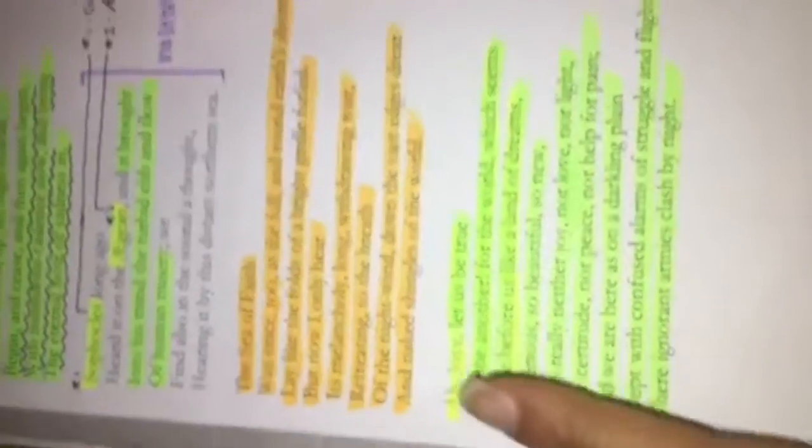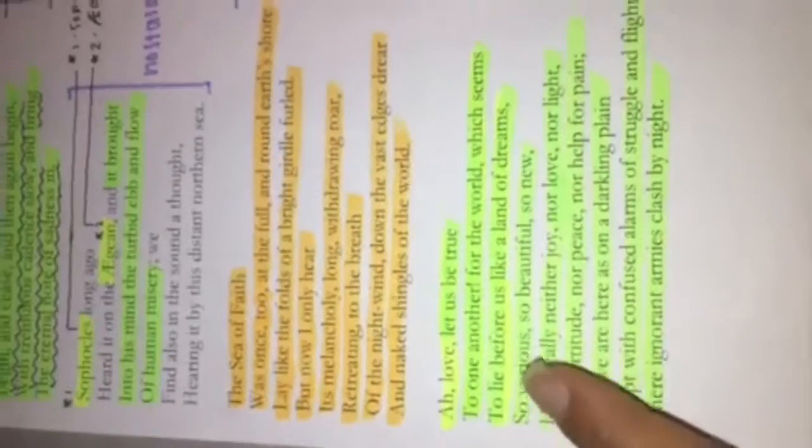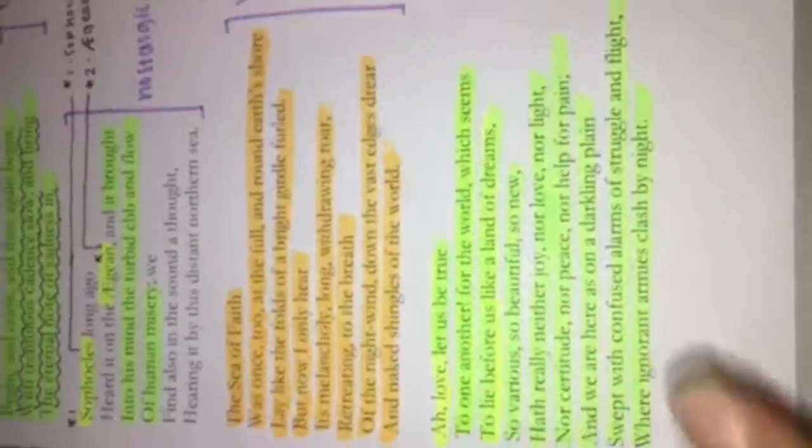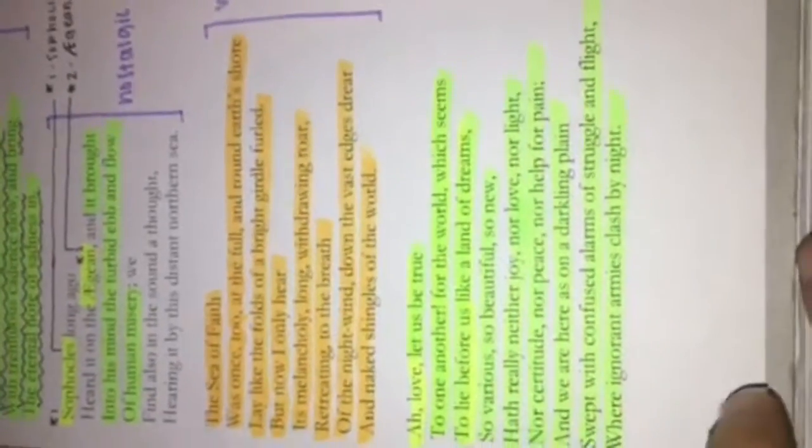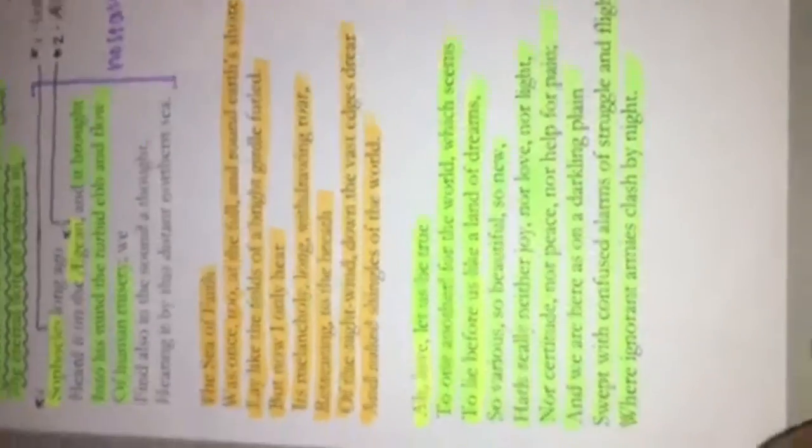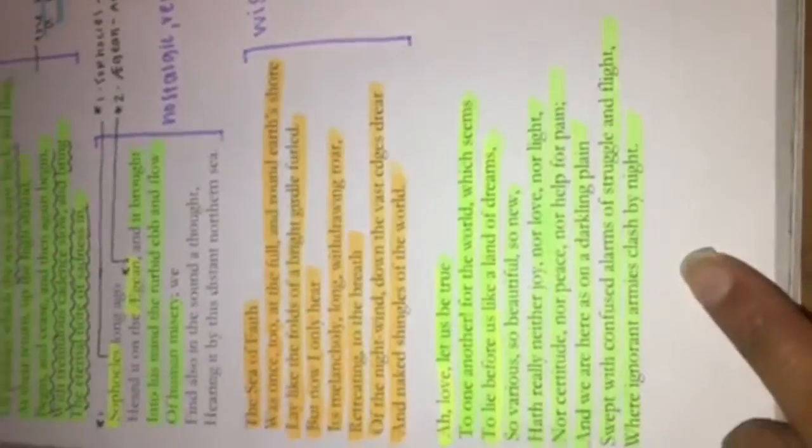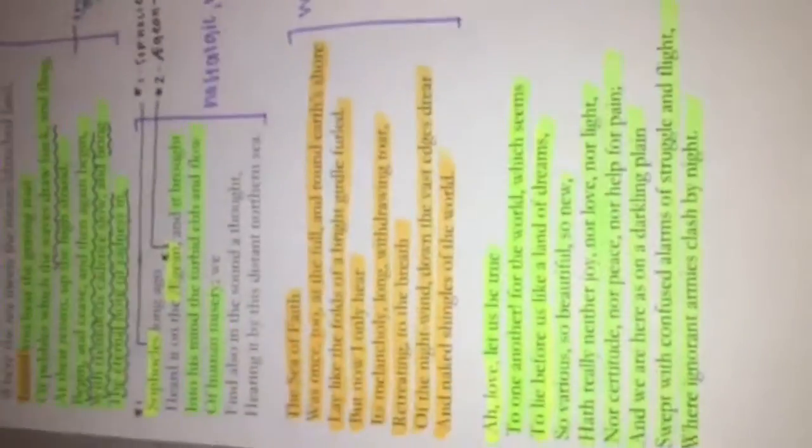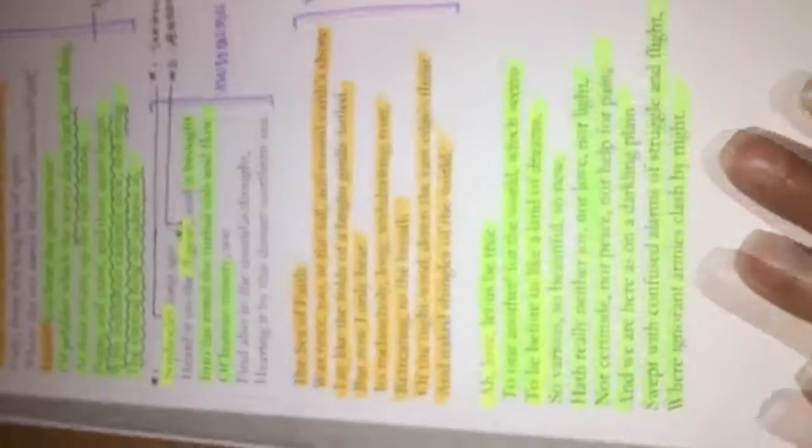It says that love, let us be true to one another, for the world which seems to lie before us like a land of dreams, so various, so beautiful, so new, has no joy, love, or light, it doesn't have peace or hope for pain, and they're here on a darkling plain, swept with confused alarms of struggle and flight, where ignorant armies clash by night. So he's basically saying, love, let us stay faithful to one another, let us continue to be happy and to love each other in this world of darkness and sadness and melancholy.